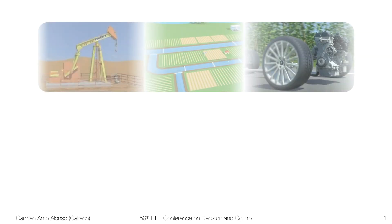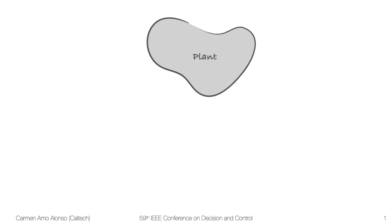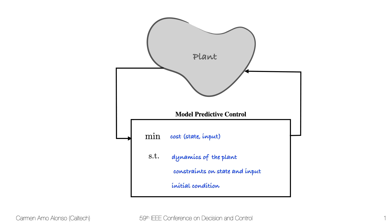In my previous talk on distributed and localized model predictive control, I discussed how useful model predictive control had been for a variety of industrial applications, and we saw how all those applications can be seen as a plant trying to solve this optimal control problem with this mathematical formulation.